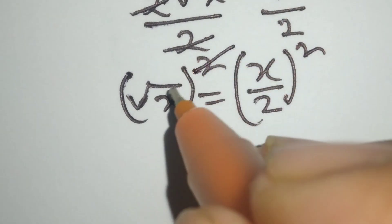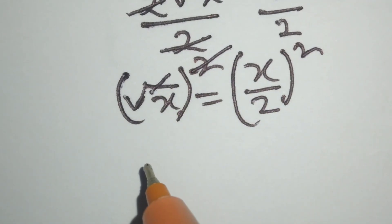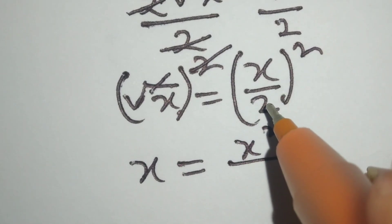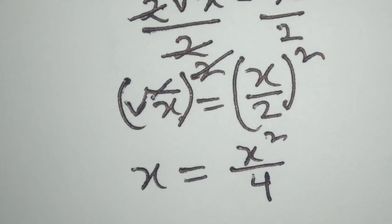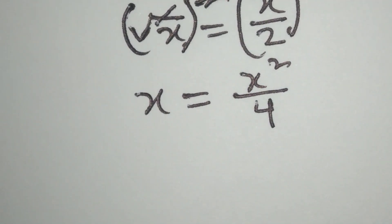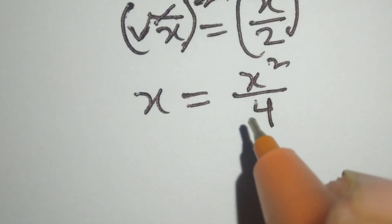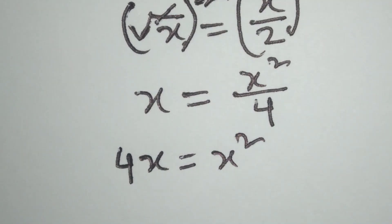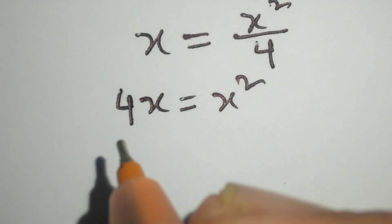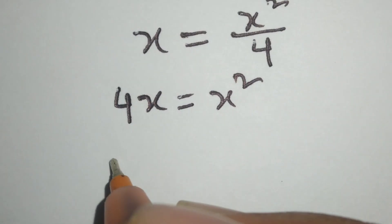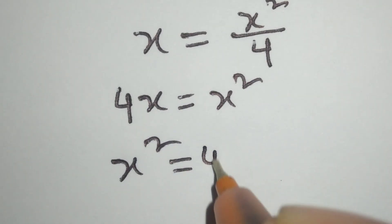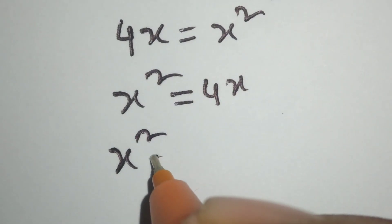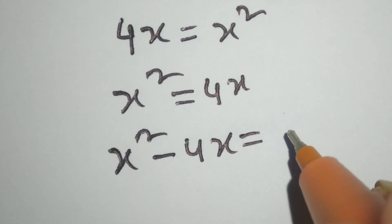The square and the square root cancel out, leaving x is equal to x squared over 4. By cross multiplication, we get 4 times x is equal to x squared. We can write this as x squared is equal to 4x, so x squared minus 4x is equal to 0.